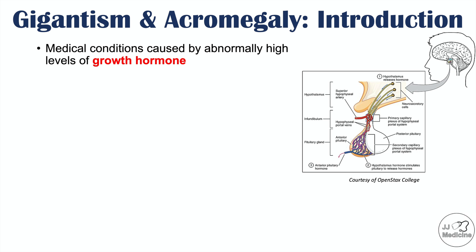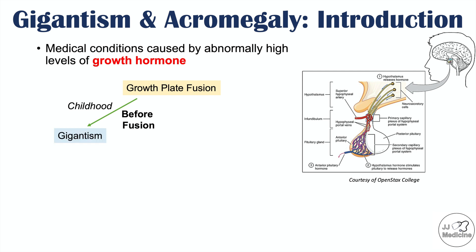The difference between these two conditions has to do with the timing of when a person is exposed to high levels of growth hormone — specifically, whether or not growth plates have fused. If an individual is exposed to very high levels of growth hormone before their growth plates have fused, such as during childhood, this leads to gigantism. After the growth plates have fused and closed, which occurs in adolescence, high levels of growth hormone lead to acromegaly.